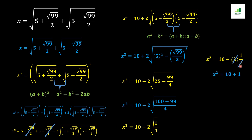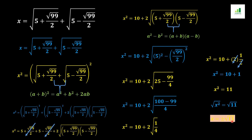In the next step, x² = 10 + 1 = 11. Applying square root on both sides, the square and root cancel, giving x = ±√11. This is the value of x for this expression. I hope this video will be very useful to all of you. If you like this video, please hit the like button and subscribe to our channel. Thank you.